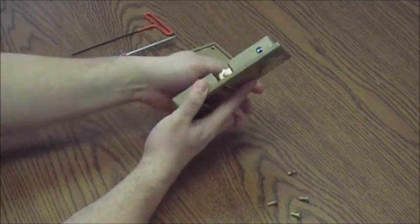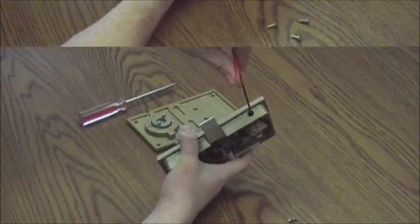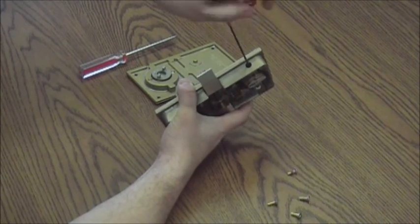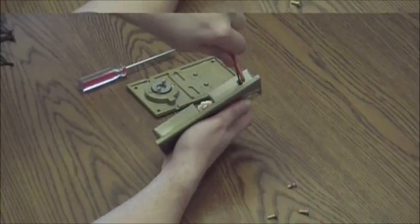Loosen each set screw until it is no longer visible in the indented groove of the lock cylinder. You will notice a slight tension on the set screw once it is cleared.